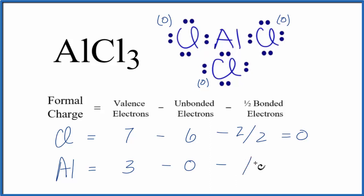Subtract 1 half of the bonded electrons. 2, 4, 6. So 3 minus 3, that's 0.